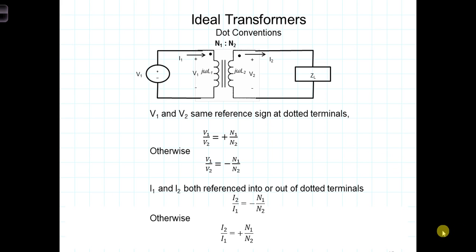As was the case with linear transformers, we had to come up with a way of specifying the polarity of the voltages and currents associated with the primary and secondary windings, because the relationships or references depend upon the direction that the actual wire is wound around the core of the transformer. So as we did with linear transformers, there's a dot convention.